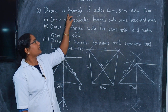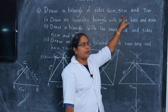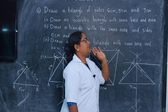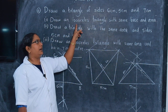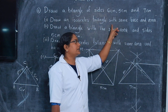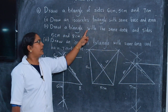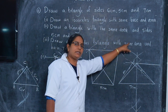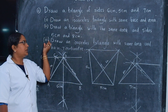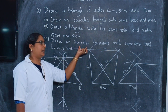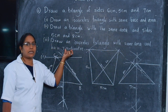Draw a triangle of sides 6 centimeter, 5 centimeter, and 7 centimeter. Sub-questions: one, draw an isosceles triangle with same base and area. Second, draw a triangle with the same area and sides 5 centimeter and 8 centimeter. Third, draw an isosceles triangle with same area and base 7 centimeter.